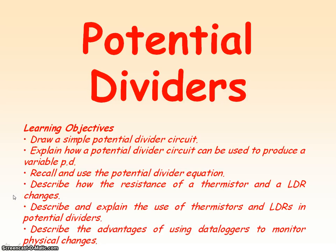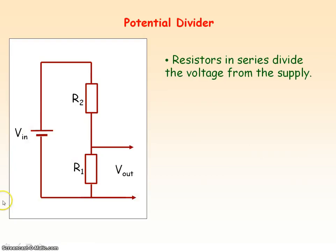We're going to be looking at potential dividers and their uses. A potential divider circuit consists of at least two resistors in series, and that's because we know in series, voltage is divided and shared between the components.